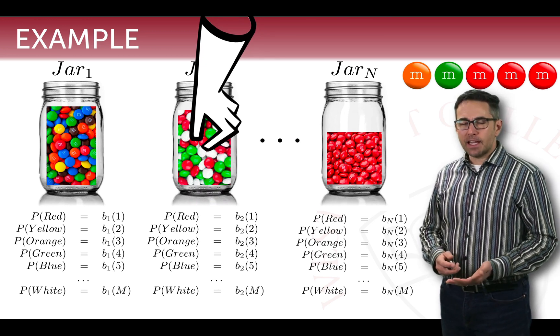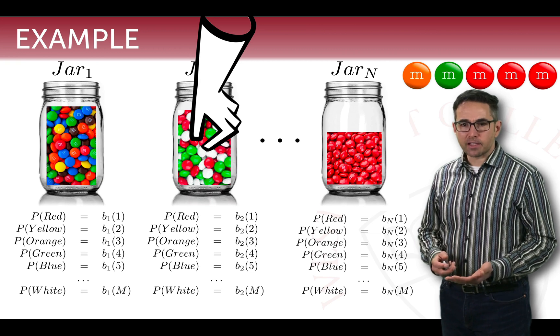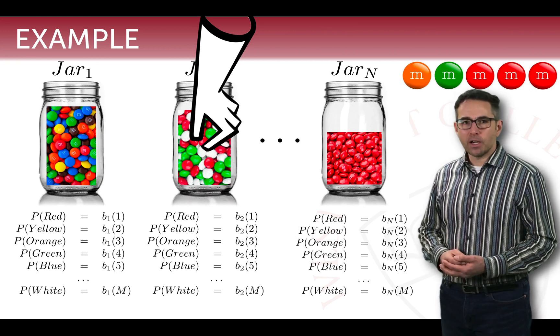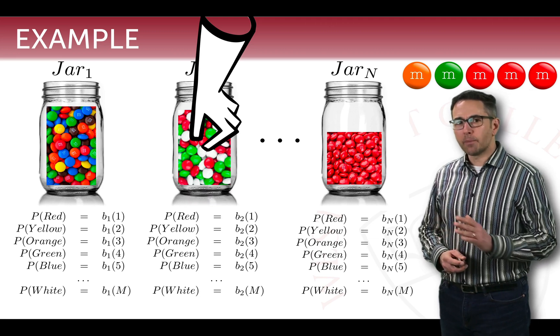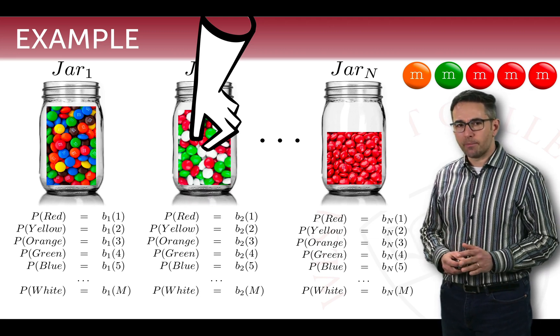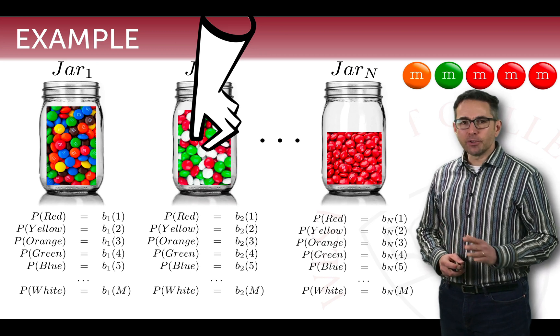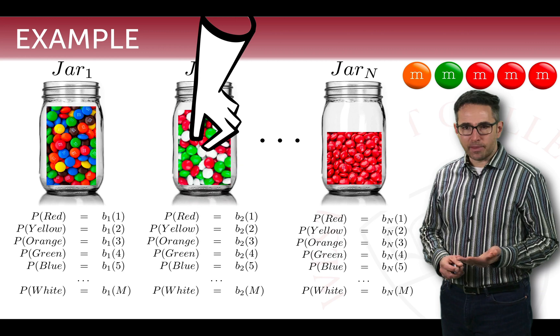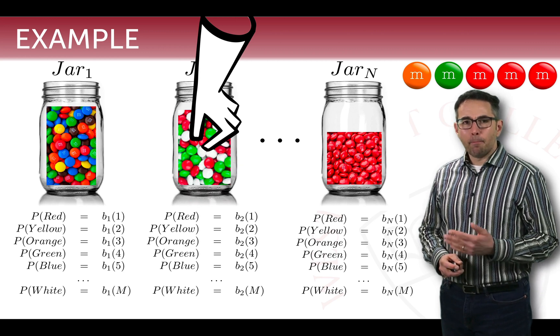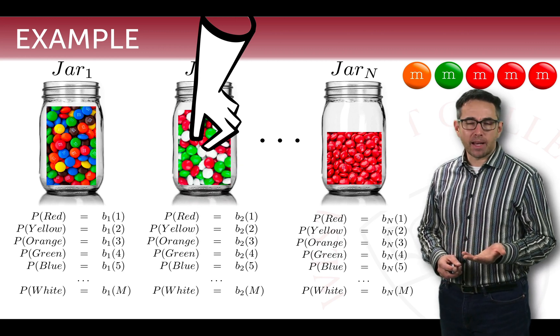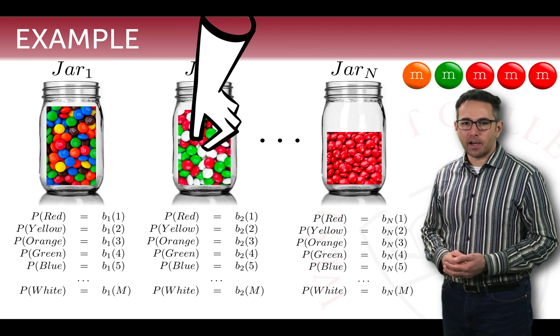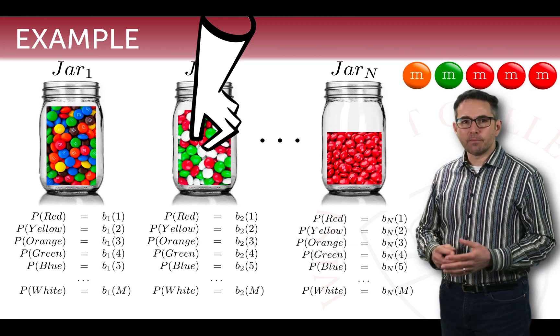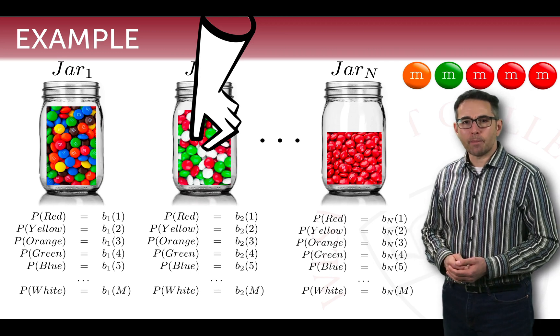And so from this example, we see several things. First of all, we see that we get a sequence of observations, but we don't know, the way the hidden Markov model works is that we don't know which jar it's drawn from. And we know that multiple jars can produce a red M&M, for example, in fact all of them in this case, but some of them can produce a red M&M with higher probability than others. So our goal is to try and understand this model and be able to formalize it so that we can reason about it.